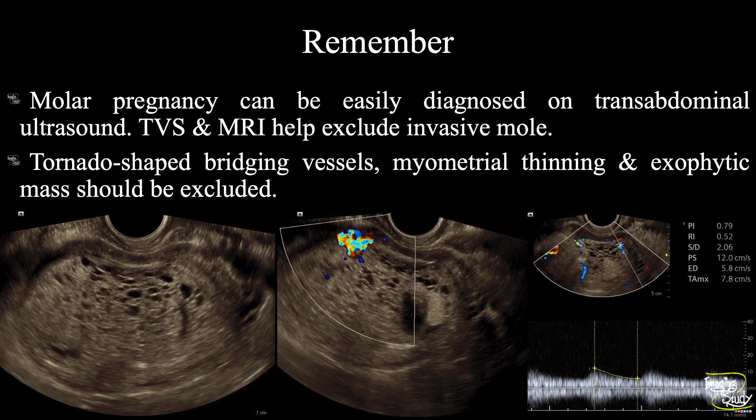The take-home message: molar pregnancy can be easily diagnosed on transabdominal ultrasound. TVS and MRI help exclude invasive mole. During reporting, you should ensure the clinician about the absence of tornado-shaped bridging vessels, myometrial thinning, and exophytic mass — which are features of invasive mole.